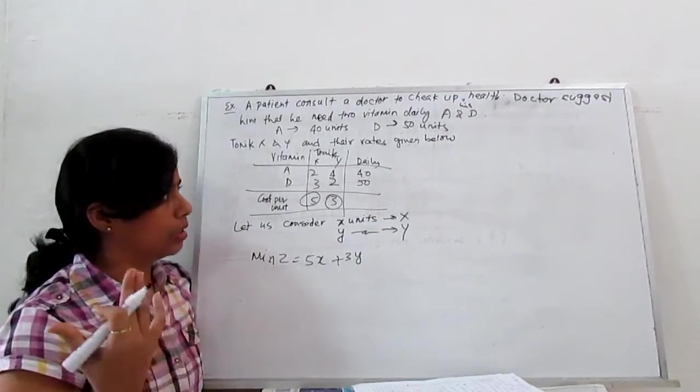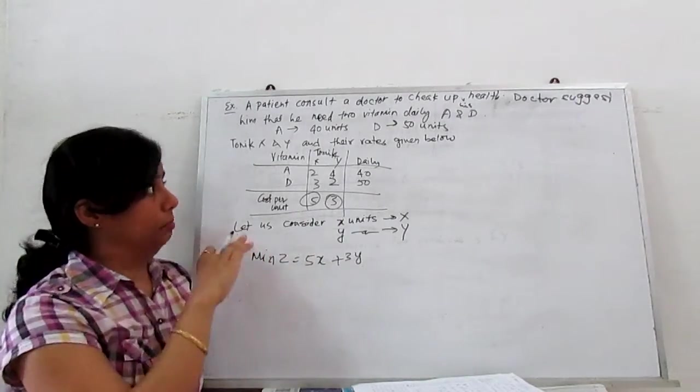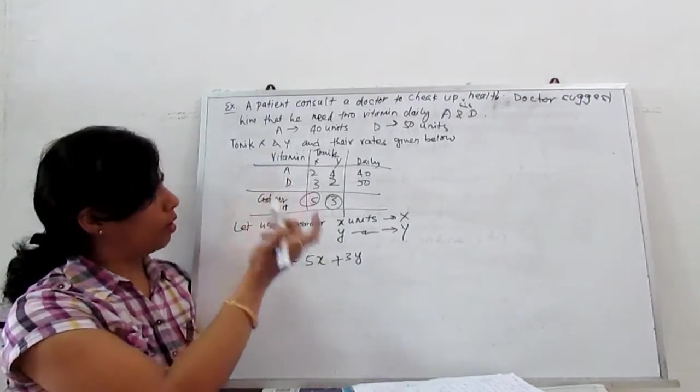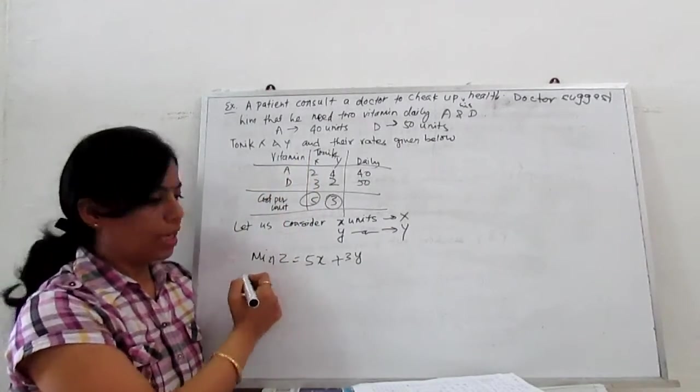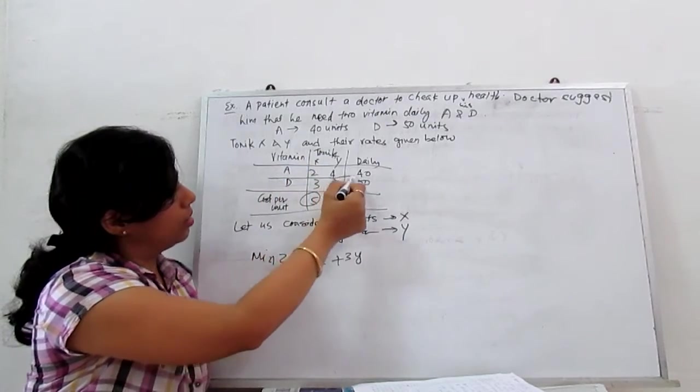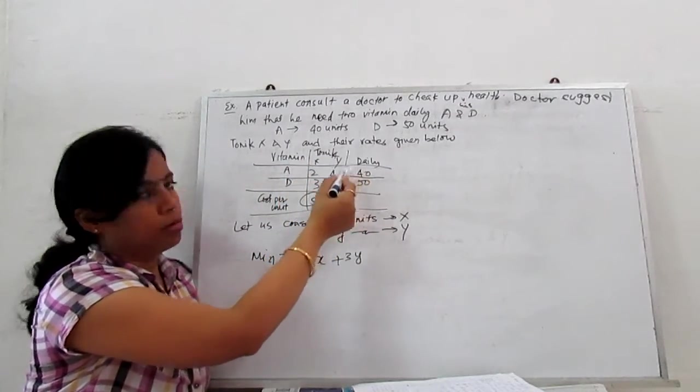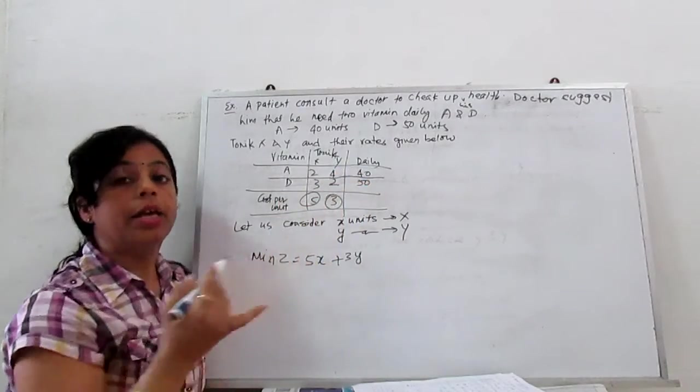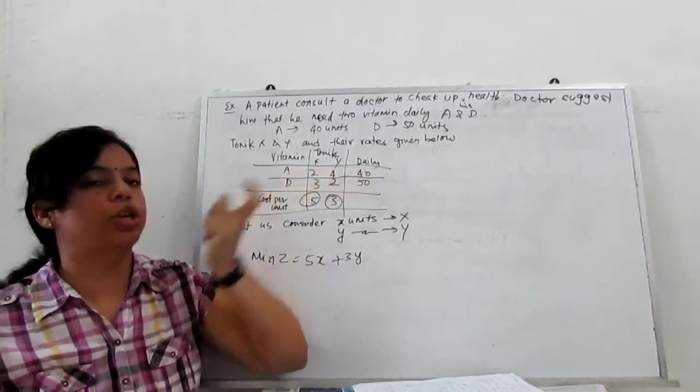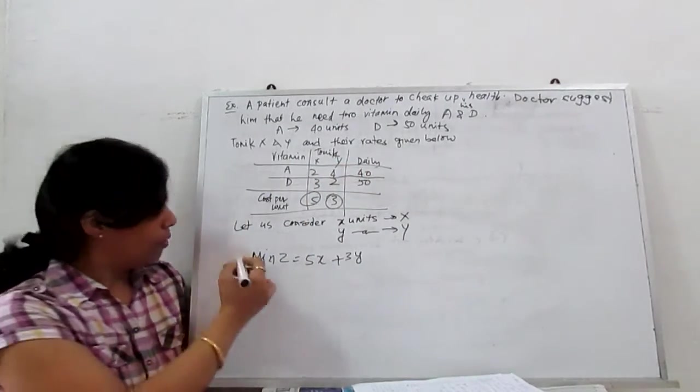Now our constraints depend on the requirement of vitamins A and D. Our inequality for vitamin A: 2X + 4Y is always greater than or equal to 40. This means the man can take at least 40 units or maybe a little more, but not less than 40 units.